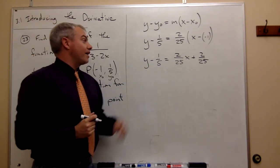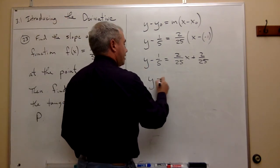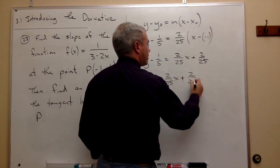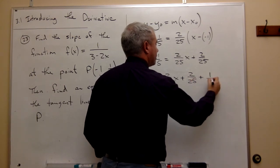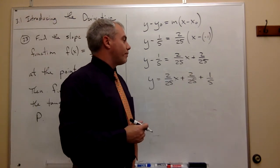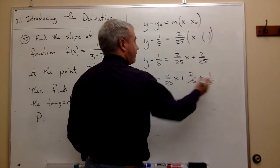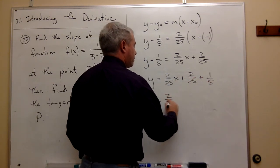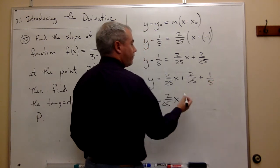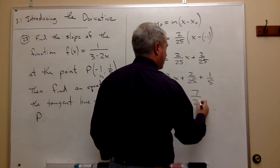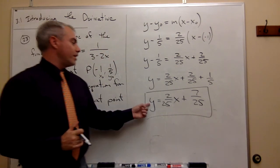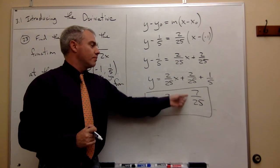Now I add one fifth to both sides. One fifth equals 5 over 25, so y equals 2 over 25 times x plus 2 over 25 plus 5 over 25. The equation of the tangent line is y equals 2 over 25 times x plus 7 over 25.